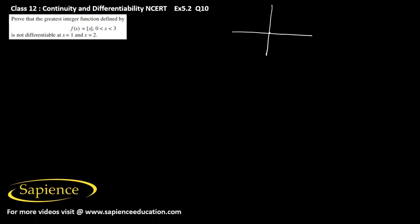We know that the graph of the greatest integer function is a step function. From 0 to 1 it will be like this, from 1 to 2 it will be like this, and from 2 to 3 it will be like this. So this is 0, 1, 2, 3 on the x-axis, and the y-values are 0, 1, and 2 respectively. This is f(x) = [x] for 0 < x < 3.